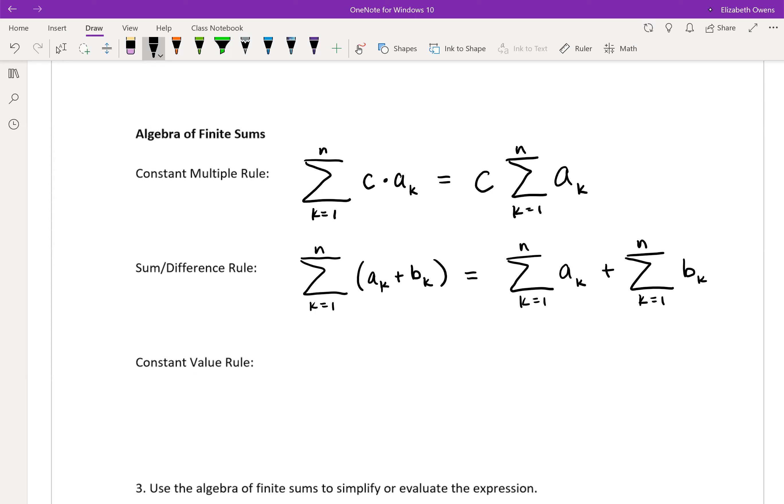And remember, of course, k equals 1 is just like the default there. You could do k equals whatever you want on your own index. So that would be the sum rule.